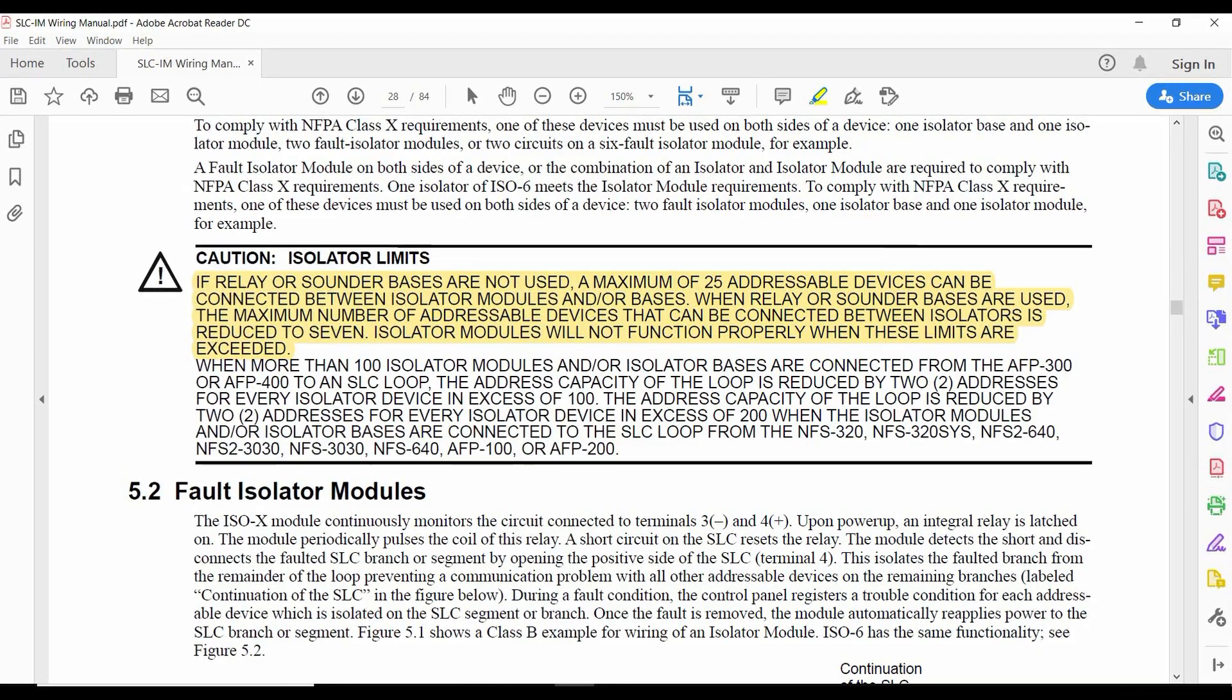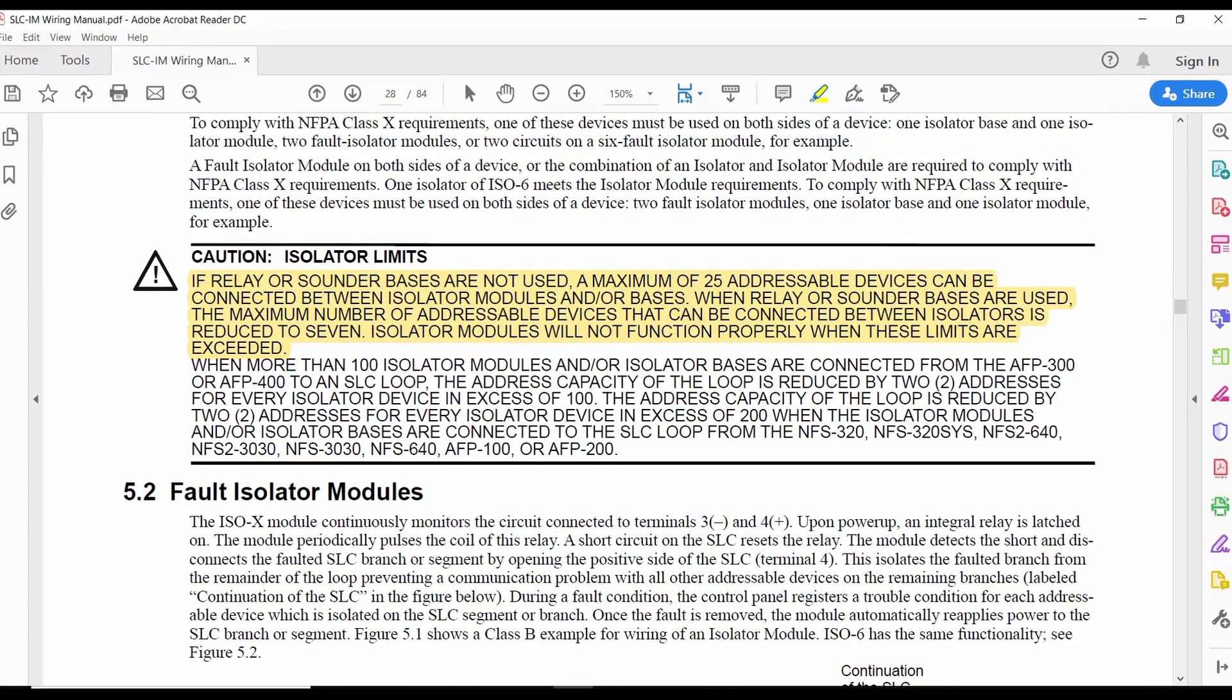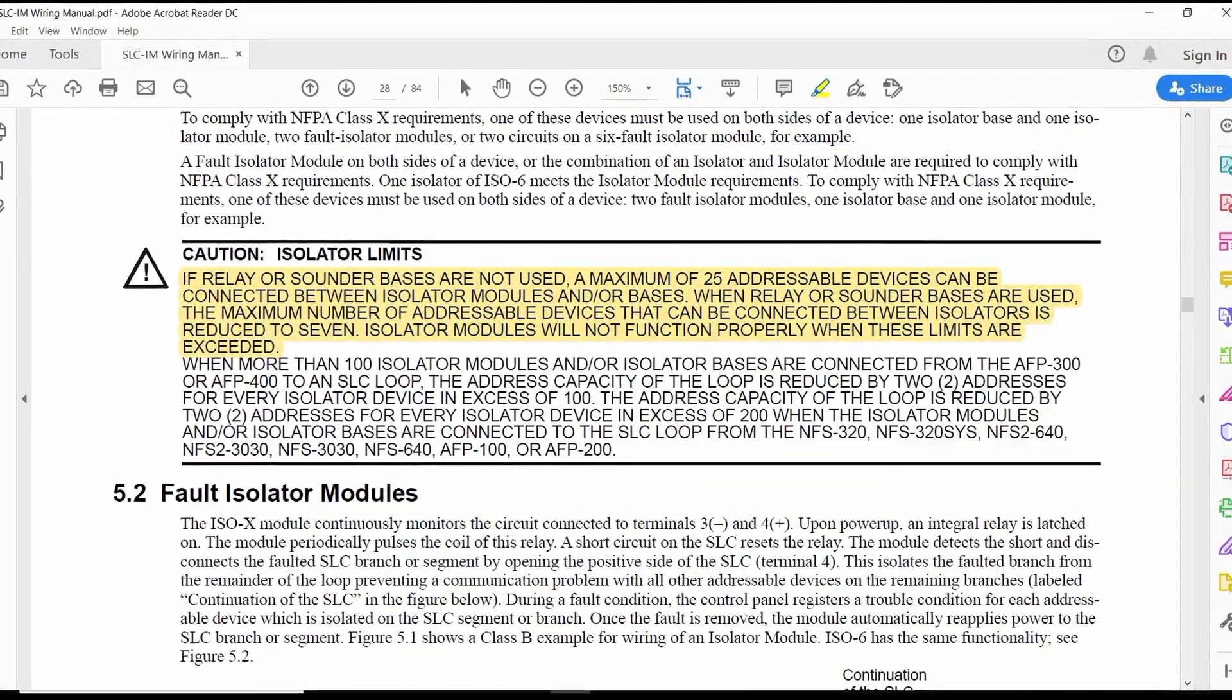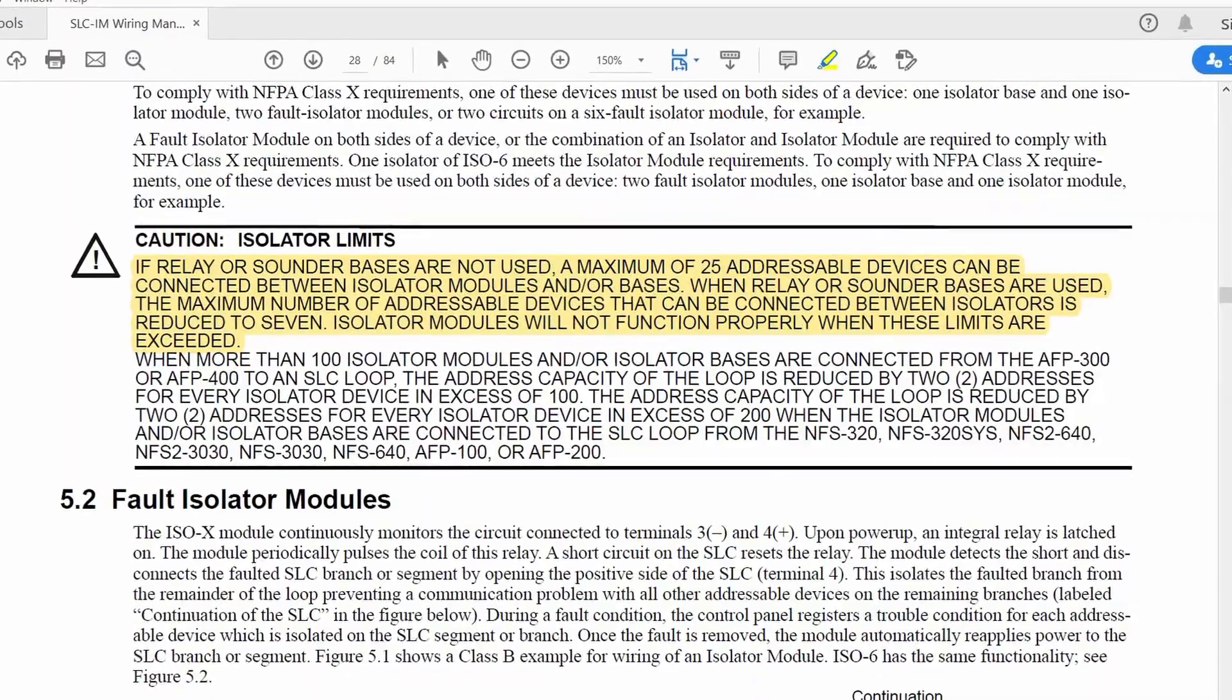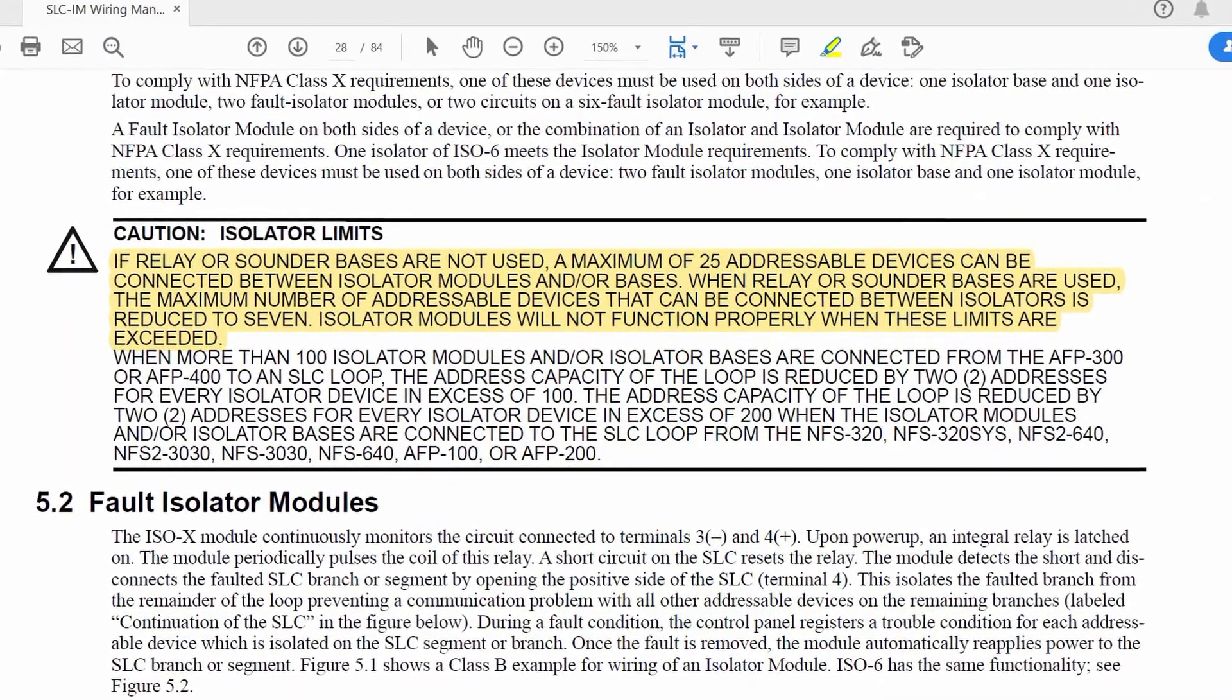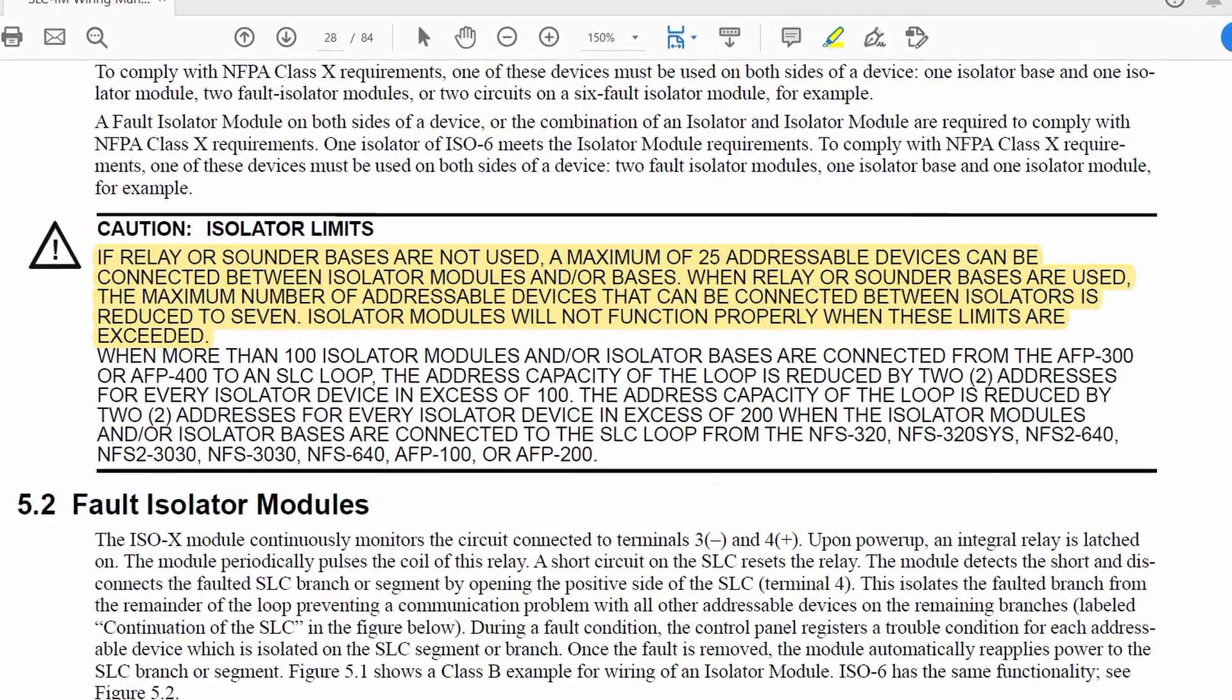Isolator modules come with some limitations that need to be considered. Only 25 devices can be installed between isolator modules for them to work properly, and that number is reduced to seven when either relay modules or sounder bases are being used.